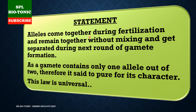The statement of the law of segregation is: alleles come together during fertilization, they remain together without mixing, and they get separated during the next round of gamete formation. Since gametes contain only one of the two alleles, they are said to be pure for their character. Therefore the law of segregation is also called the law of purity of gametes, and this law is universally applicable.